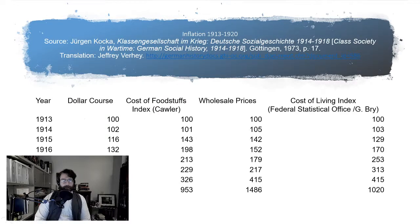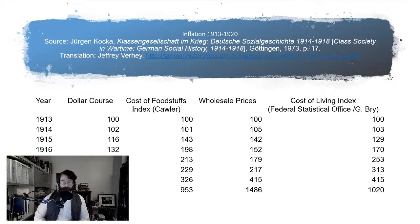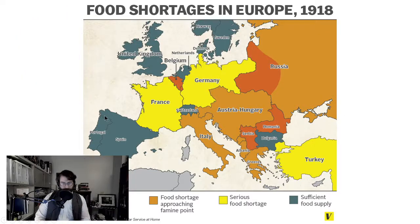By 1917-1918, inflation in Germany is not particularly good but nowhere near what it's going to be after the war is over. The cost of foodstuffs by 1918 has about doubled, and the cost of living index has about tripled what it was in 1913. So even though Germany still looks quite strong — their armies are still occupying foreign territory, the Reich itself is not under direct threat — internally their economy is grinding down.